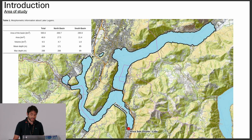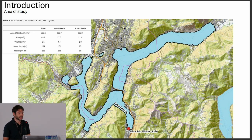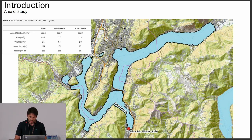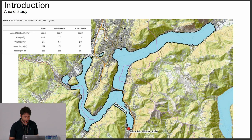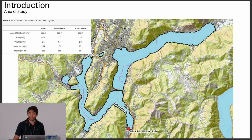The study area is Lake Lugano. We can speak of Lake Lugano as two lakes, because there is a moranic deposit in Melide, upon which a bridge has been built. The north basin has a maximum depth of around 300 meters. The south basin has a maximum depth of 90 meters, and they have quite different behavior.